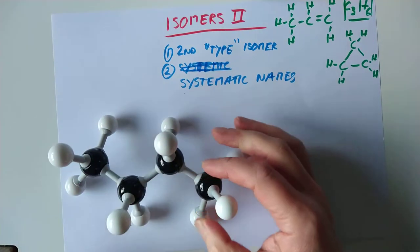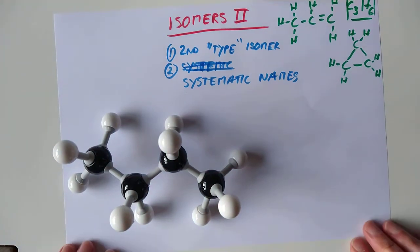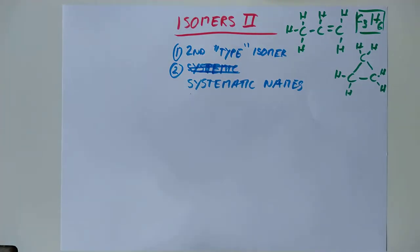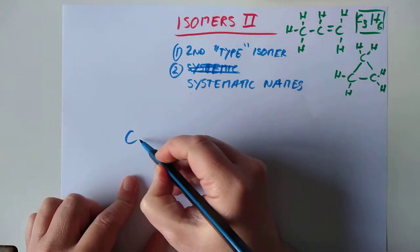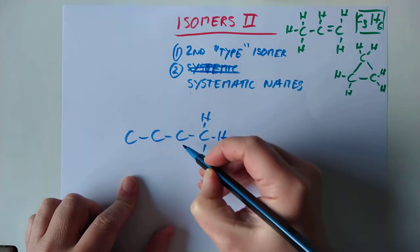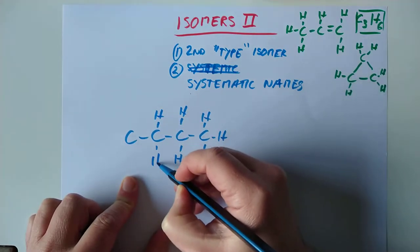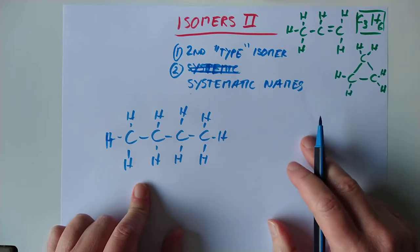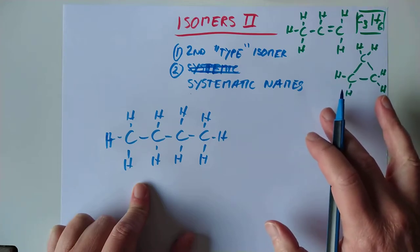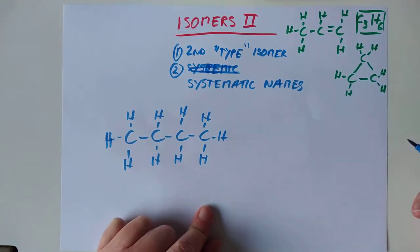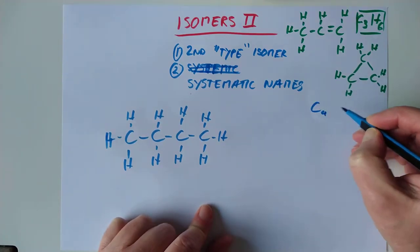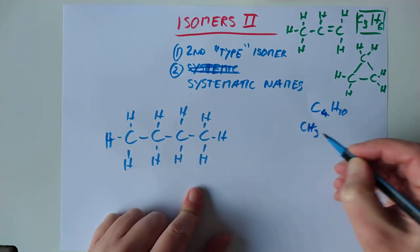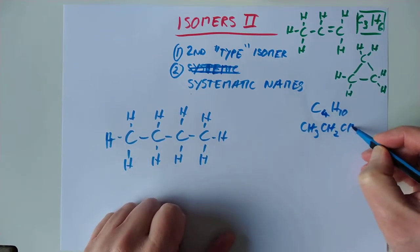This is a molecule. Feel free to pause the video and challenge yourself to name that molecule. It's butane. We can represent it a slightly different way. Full structural formula. The molecular formula is C4H10, CnH2n plus 2. The shortened structural formula is CH3, CH2, CH2, CH3.